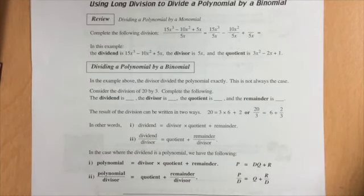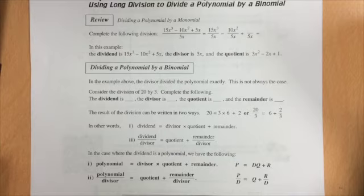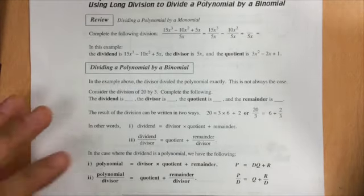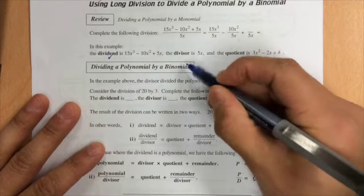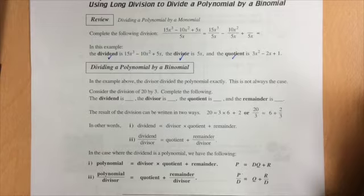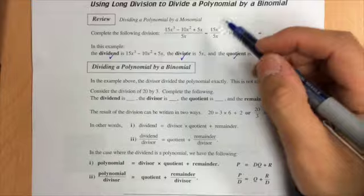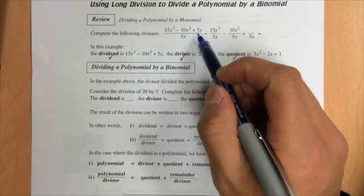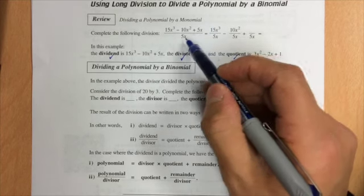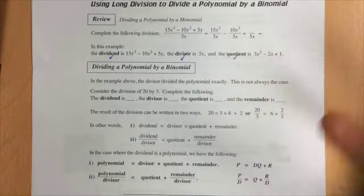Welcome to lesson number two. We're going to look at using long division to divide a polynomial by a binomial. You're going to have to remember some terminology from earlier grades. The main terms to remember are the dividend, the divisor, and the quotient. Looking at this example, 15x cubed minus 10x squared plus 5x is the dividend, and the divisor is 5x — the one that is going into the number being divided.